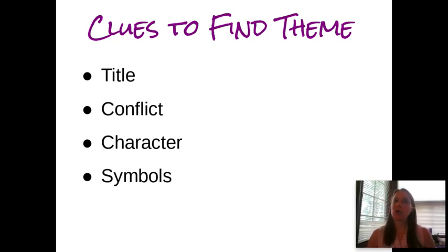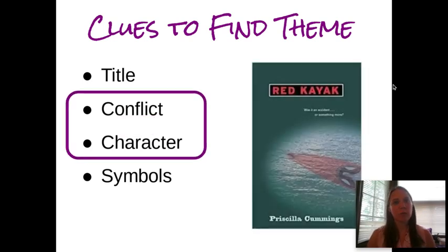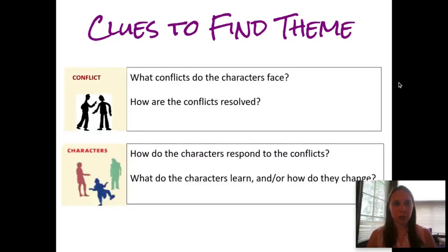It totally depends on the story, but those four clues we talked about were the title, the main conflict, the characters, and symbols — if there's a symbol in there that has a deeper meaning. For Red Kayak, the two that I really think will help you find the theme would be the conflict and the characters. So we're going to look at a couple questions relating to those two clues.